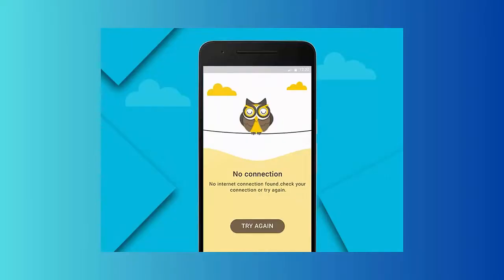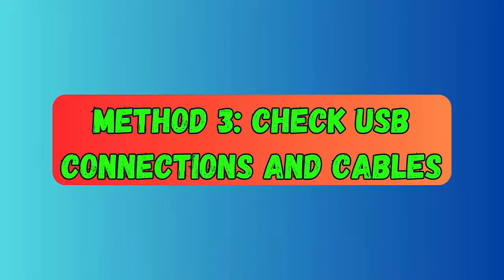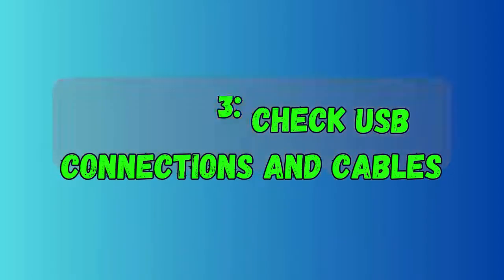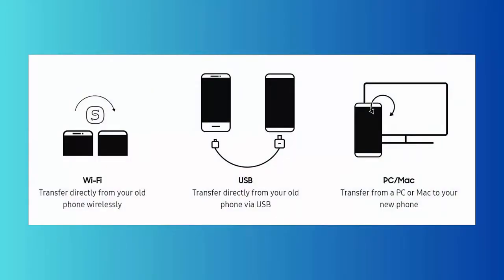Method three: Check USB connections and cables. You should check if USB connections and cables are working properly or not. When you face Smart Switch cable not working, make sure all cables are properly connected to your devices or PC.